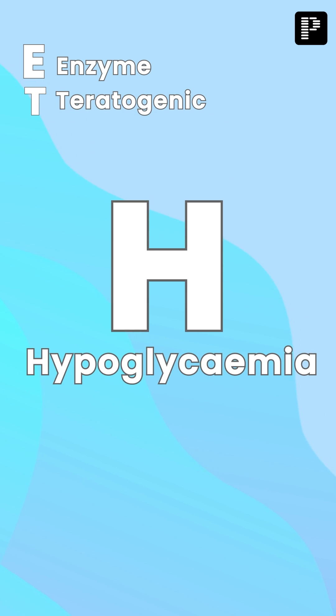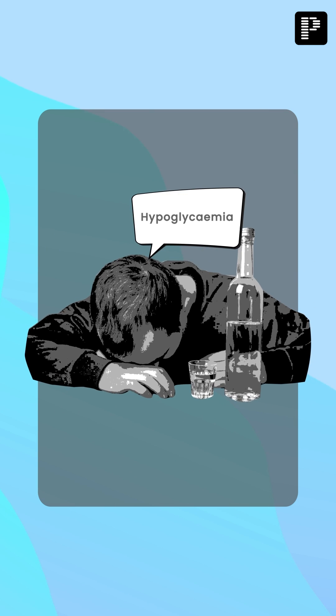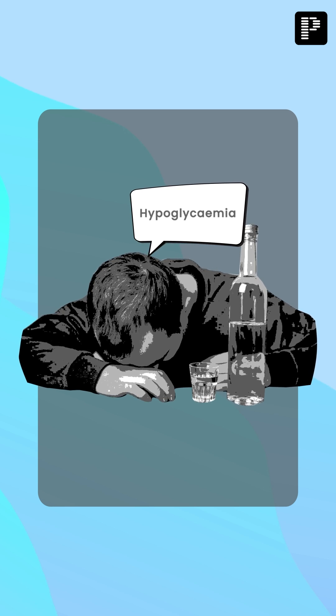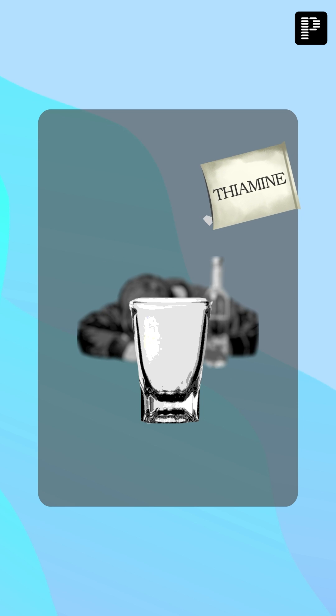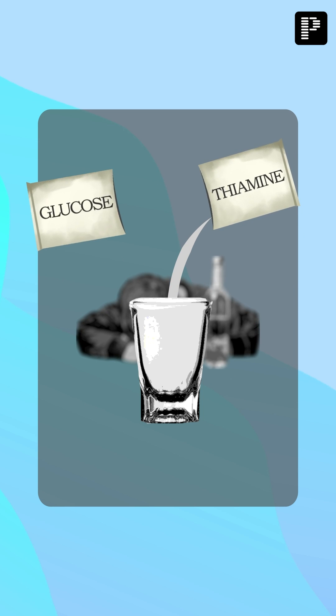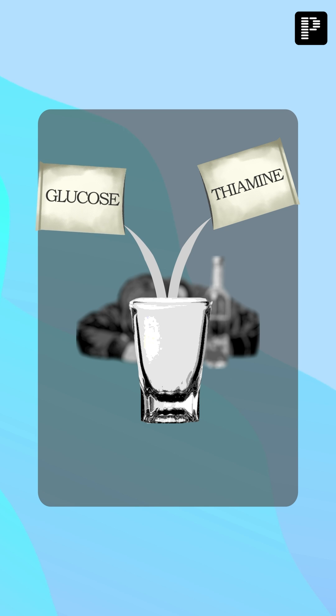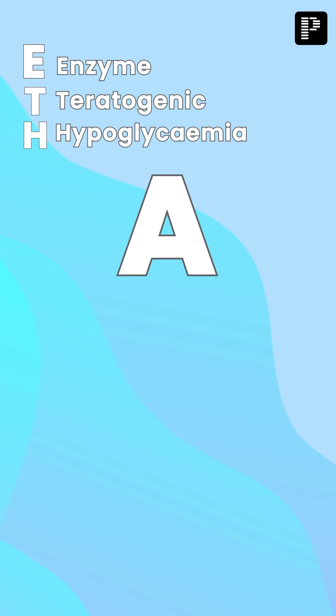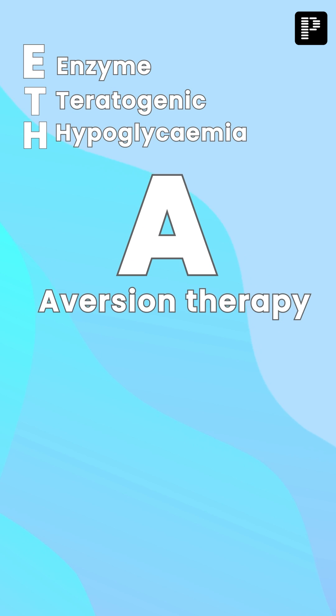The next letter is H — H stands for hypoglycemia. Whenever a patient is alcoholic and presents with hypoglycemia, when you manage this hypoglycemia, you must give thiamine along with glucose. This is very, very important.